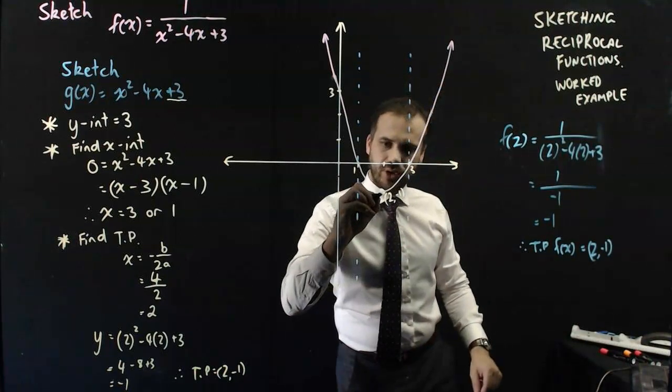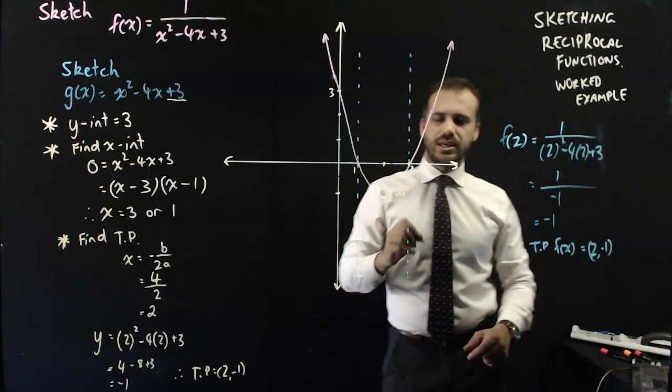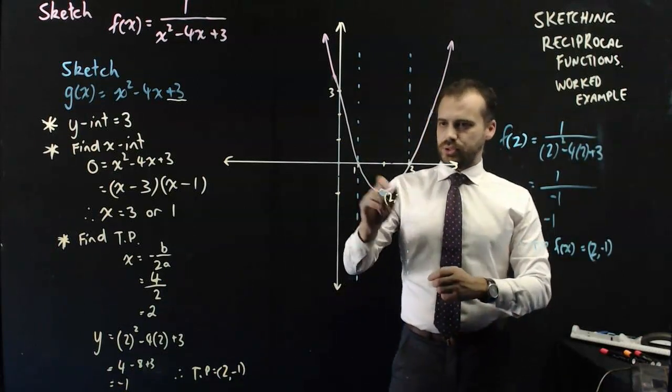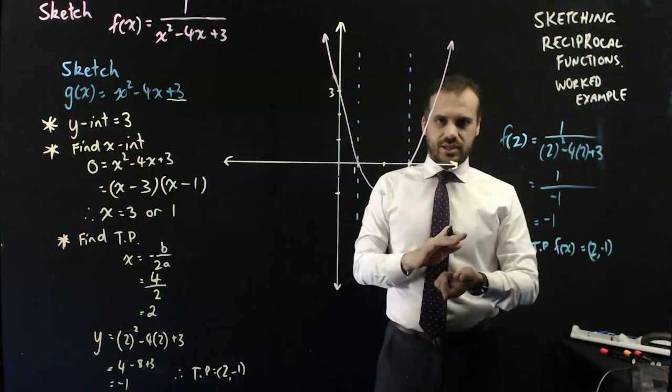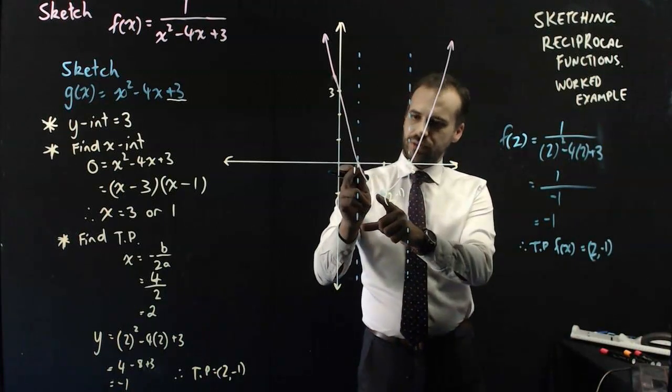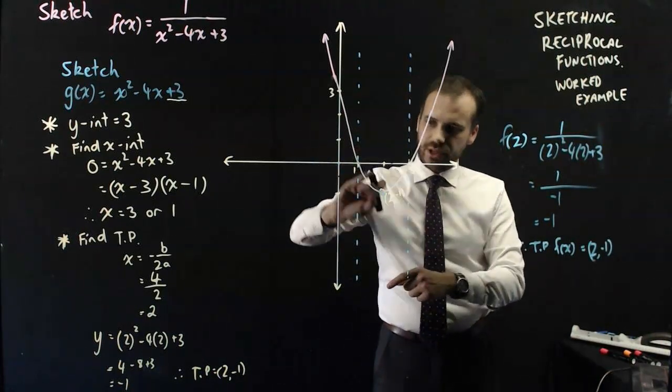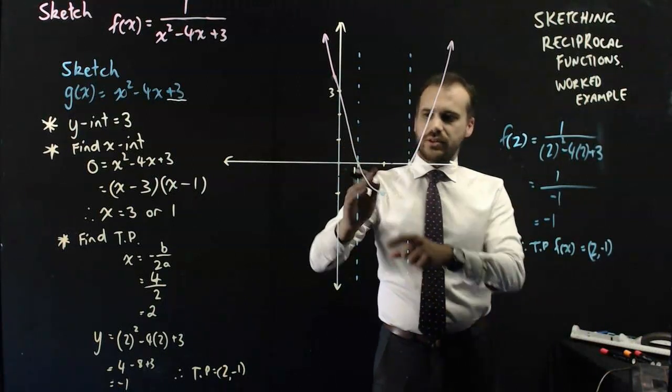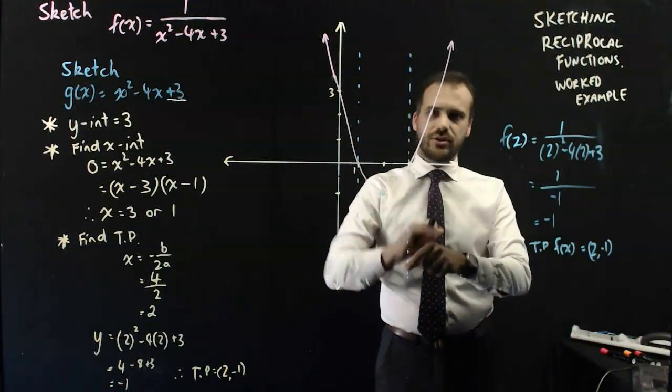All right. So I know that the turning point of my new function is going to be here. And what do I know? Let's talk about increasing and decreasing. The function from here to here is decreasing. That means that the function from here to here is going to be increasing.